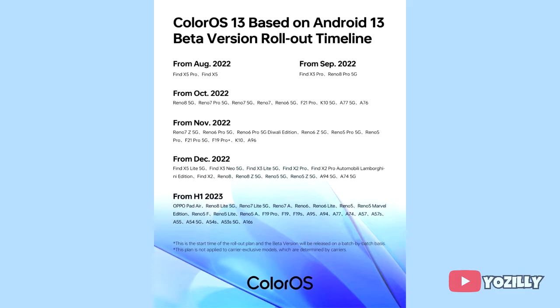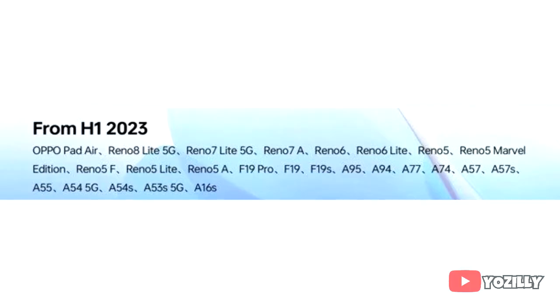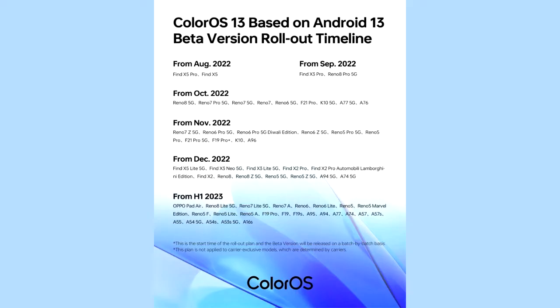If you have the Oppo Pad Air, Reno 8 Lite 5G, Reno 7 Lite 5G, Reno 7A, Reno 6, Reno 6 Lite, Reno 5, Reno 5 Marvel Edition, Reno 5F, Reno 5 Lite, Reno 5A, Oppo F19 Pro, F19, F19s, A95, A94, A37, A74, A57, A57s, A55, A54 5G, A54s, A53s 5G, or A16s, then you will definitely get the official Android 13 update with ColorOS 13 on top.